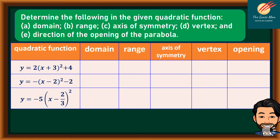Now that you know the properties of the graph of a quadratic function, let's answer this practice exercise. Determine the following in the given quadratic function: the domain, range, axis of symmetry, vertex, and direction of the opening of the parabola. Consider the quadratic function y = 2(x + 3)² + 4. The domain is from negative infinity to positive infinity — the set of all real numbers.